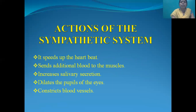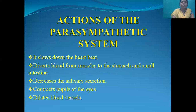Actions of the sympathetic system: it speeds up the heartbeat, sends additional blood to the muscles, increases salivary secretions, dilates the pupils of the eyes, and constricts blood vessels. Actions of the parasympathetic system: it slows down the heartbeat, diverts blood from muscles to the stomach and small intestines, decreases salivary secretions, constricts pupils of the eyes, and dilates blood vessels.